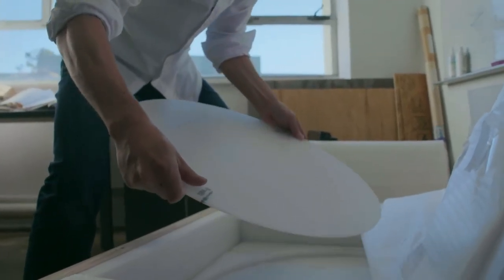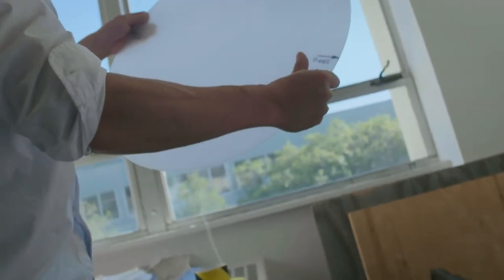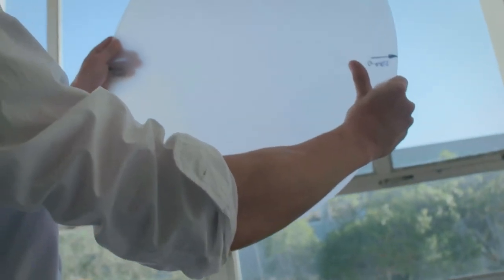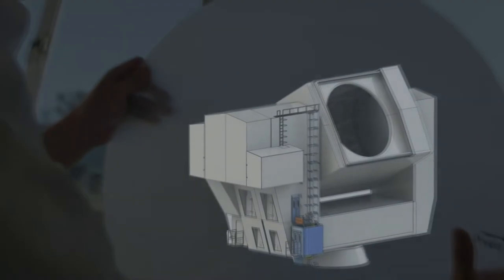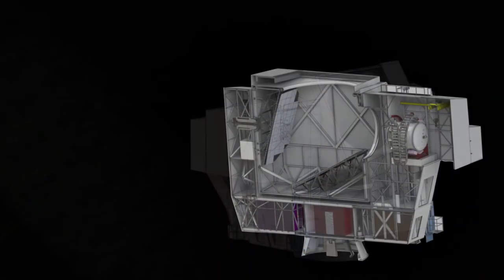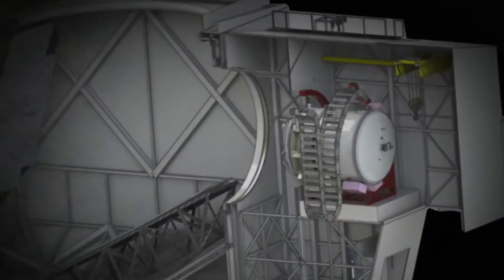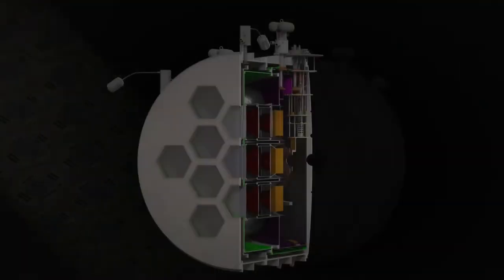For the Simons Observatory, on the top of the mountain, we're going to install several telescopes of two different kinds. One is the so-called large telescope. It's got a six-meter diameter mirror, and it's going to be about four stories tall. It'll have a little elevator in it. It's a pretty big object. But the really special part of the telescope is in the back. It's the camera.